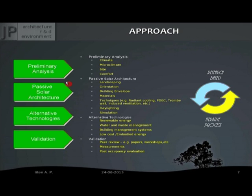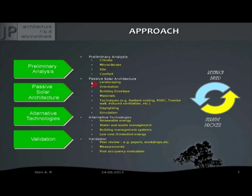We try to adopt passive solar architecture — using natural means to attain comfort and reduce energy consumption. This involves how you use sunlight, wind, materials, and your design itself to achieve comfort. Typically you can use landscaping, orientation of the building, building envelope, and materials. Simple techniques include shading and colour, and advanced techniques include radiant cooling, passive downdraft evaporative cooling, Trombe walls, and induced ventilation.